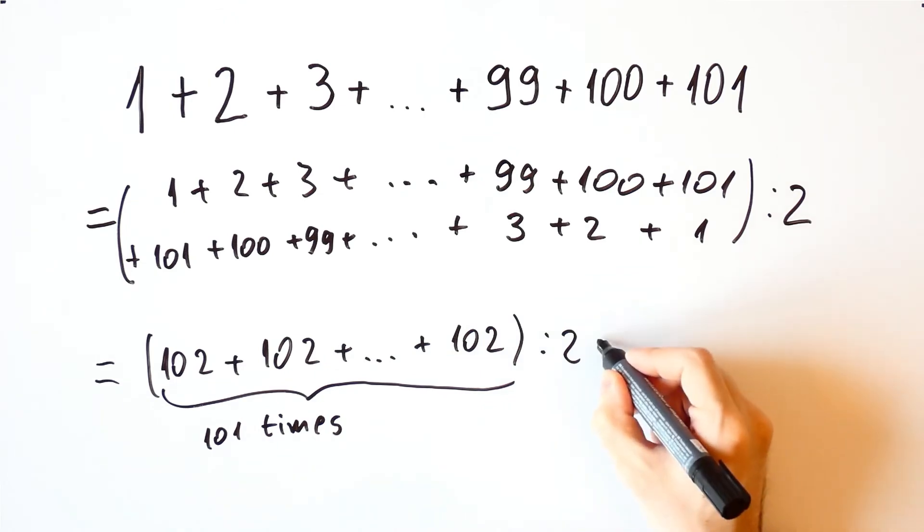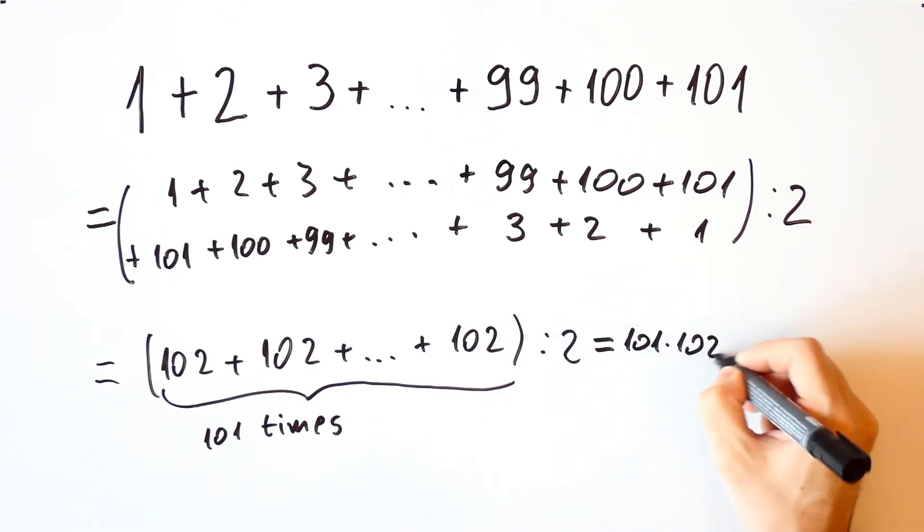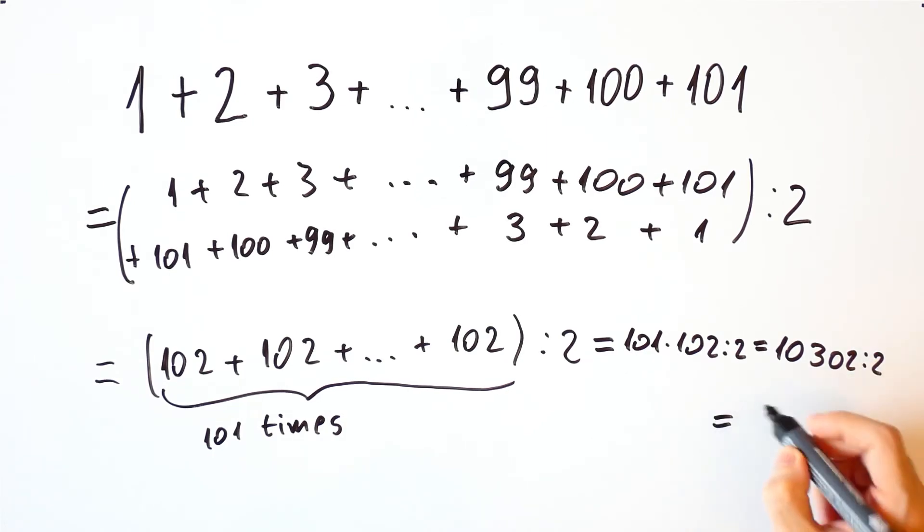So this is equal to 101 times 102 divided by 2, which is equal to 10,302 divided by 2, and that is equal to 5,151.